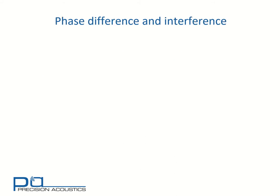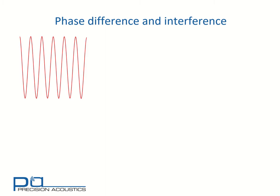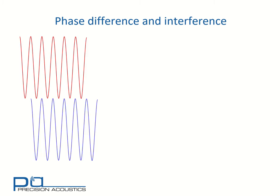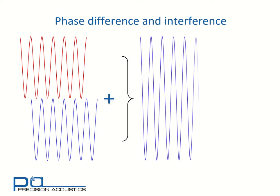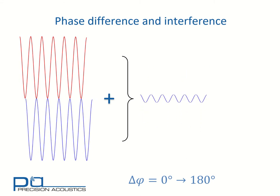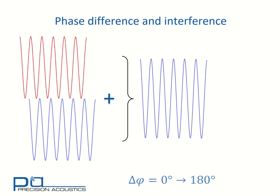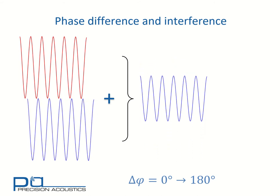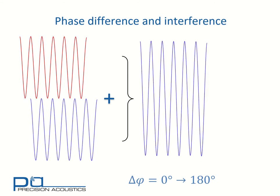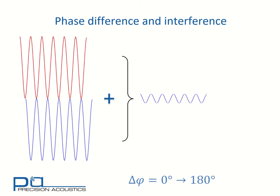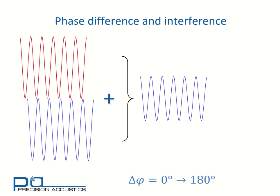Phase difference is important because of the way it impacts on interference. If we consider two separate sinusoids which are in phase with one another — a zero degree phase shift — we can see that the resultant of summing the two together is a double amplitude signal. But if we change the phase of one of those components and allow the phase change to vary between 0 and 180 degrees, we can see that the signal which results from the interference of the two can diminish all the way to zero amplitude when they are exactly out of phase.